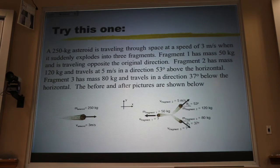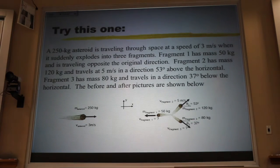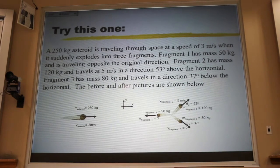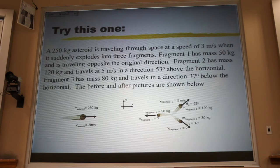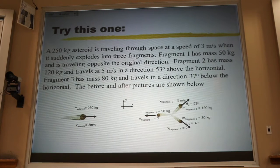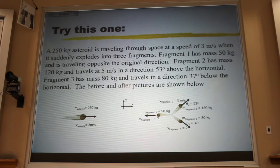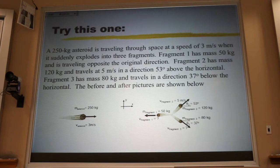We have this meteor - I'm sorry, an asteroid - coming in in the X direction. And then it explodes. And you remember that an explosion is a type of collision. So this would be a two-dimensional collision problem. So let's solve that.